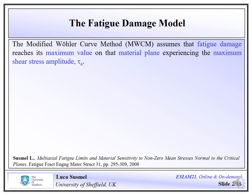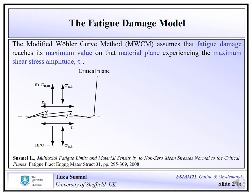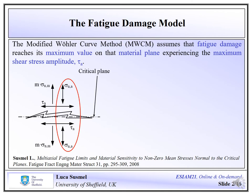The modified Wöhler Curve method is a conventional critical plane approach where the critical plane is defined as the plane experiencing the maximum shear stress amplitude tau_A. According to this fatigue damage model, microcracks are supposed to initiate on those material planes experiencing the maximum shear stress amplitude. But fatigue damage also depends on the amplitude of the stress perpendicular to the critical plane, which favors the crack propagation process by cyclically opening and closing the microcracks themselves.